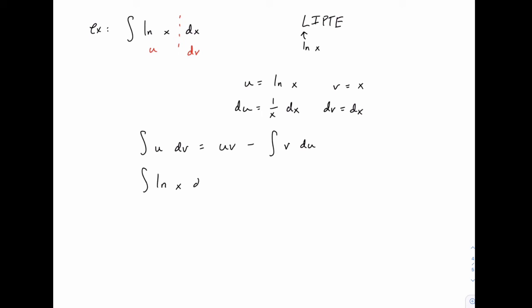that would be the integral of the natural log of x dx equals u times v. So that would be natural log of x times x. But I'll write it this way so it's a little bit clearer. x times the natural log of x minus the integral of v times du. v is x, du is 1 over x dx.